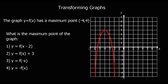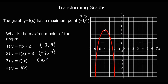Here are some for you to try — give these a go, pause the video, and see if you can work out the new coordinates of the maximum point. For f(x minus 2): inside the bracket, changes x, does the opposite — so plus 2 to the x — giving (minus 2, 4). For f(x) plus 3: outside the bracket, changes y, says plus 3, so y goes to 7. For f(minus x): inside the bracket, x becomes negative — so it becomes (4, 4). For minus f(x): outside the bracket changes y, x stays the same, and it becomes minus 4.